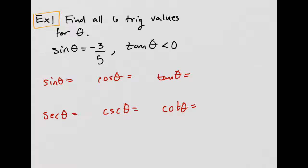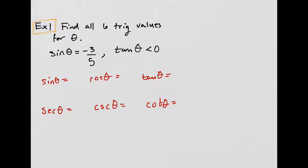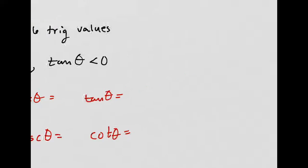It gives us that information, and in red is what we're trying to find. The first thing I'm going to do is determine which quadrant theta is in. Then I'm going to use the right triangle definitions for trig functions.